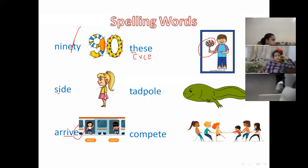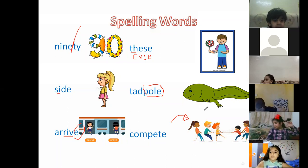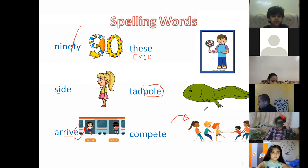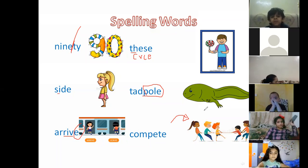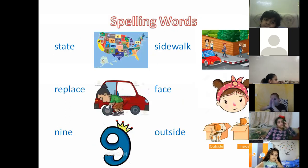'Tadpole' — pole follows consonant-vowel-consonant and final E. 'Compete' — what's the meaning of compete? It's like when we have a rope and three people pull on one side and three on the other. It means to try to win in a competition — a contest in which all who take part strive for the same thing, all of them trying to win. So again: compete, tadpole, these, nine, side, arrive.